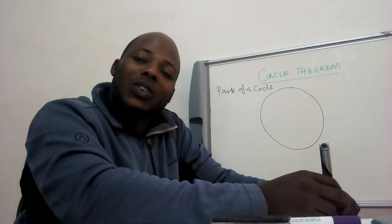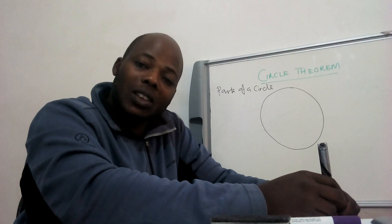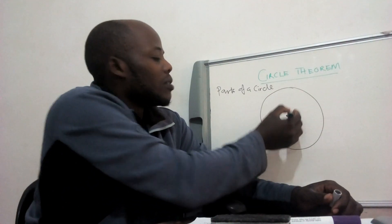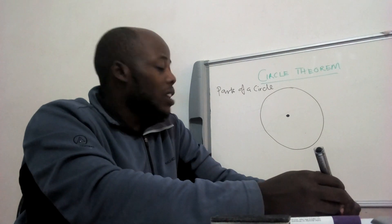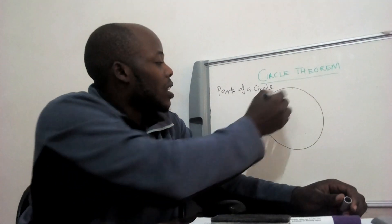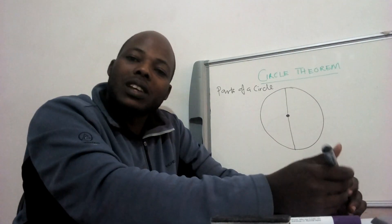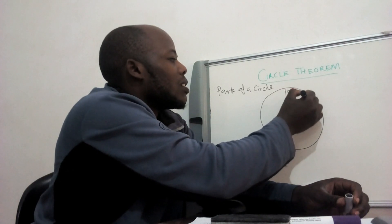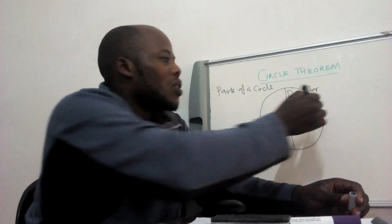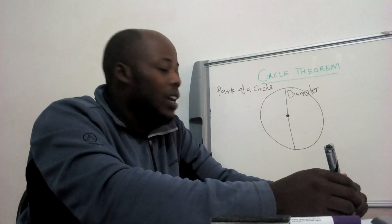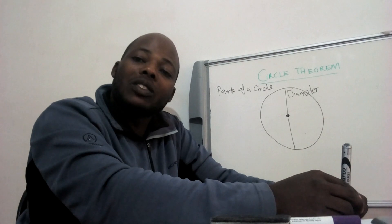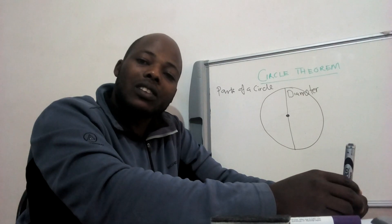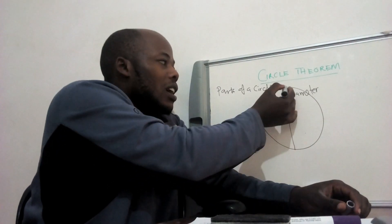The parts of the circle that you need to know: a circle has got what we call a center. The other thing is that a circle has got a diameter. A diameter is simply a line passing through the center, touching two parts of the circle or the circumference — it's touching this part and this other part.